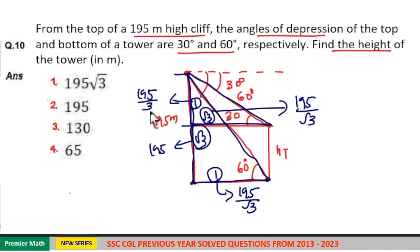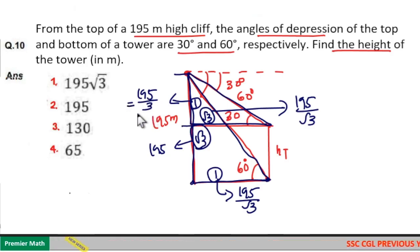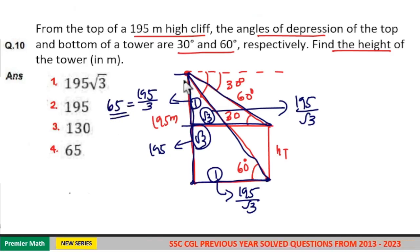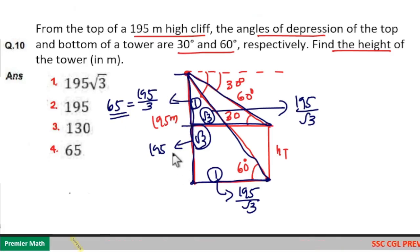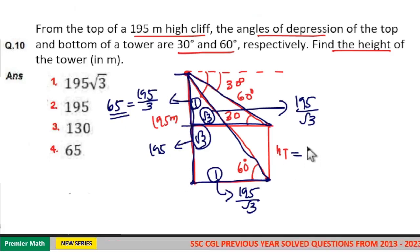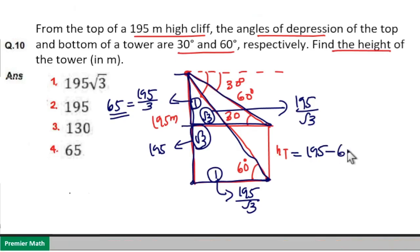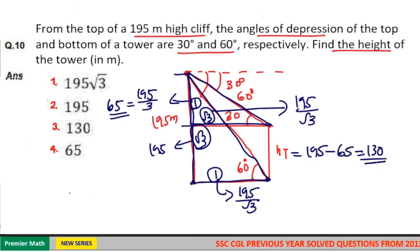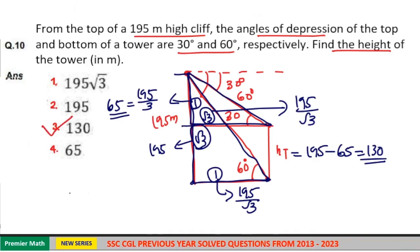195 divided by root 3 multiplied by root 3 equals 65. So if this height is 65 and the total height of the cliff is 195, then the height of the tower is 195 minus 65, which is 130. Option 3 is your answer.